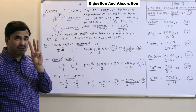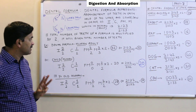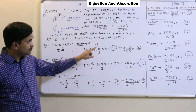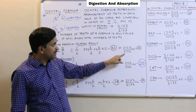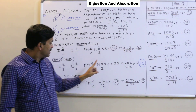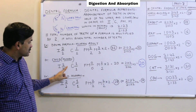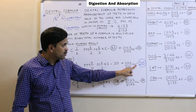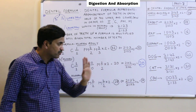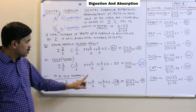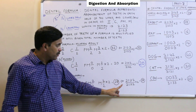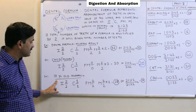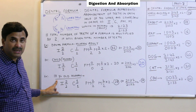So we have created three types of dental formulas for human beings. Human adult: 2, 1, 2, 3 upon 2, 1, 2, 3 into 2 equals 32. Child: 2, 1, 0, 2 upon 2, 1, 0, 2 into 2 equals 20. And for a 17-year-old: 2, 1, 2, 2 upon 2, 1, 2, 2 into 2 equals 28.